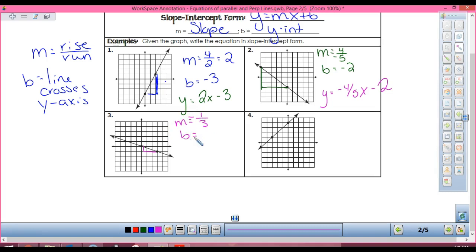Where does this cross the y-axis? Zero. At zero. So y equals negative one-third x plus zero.